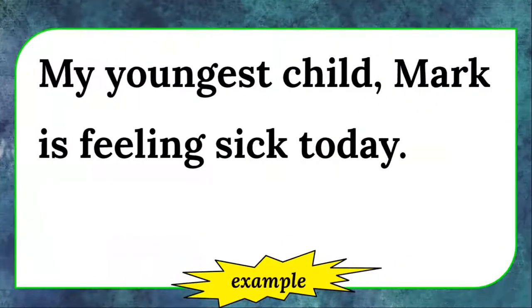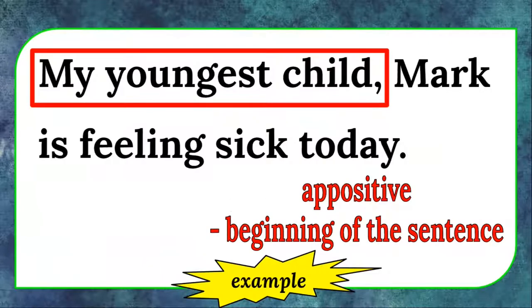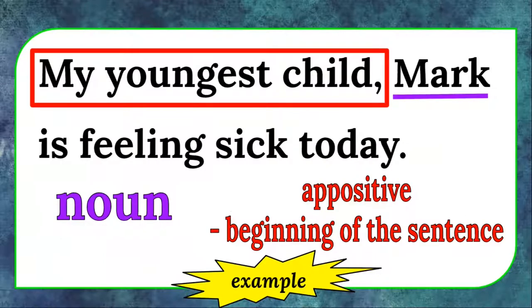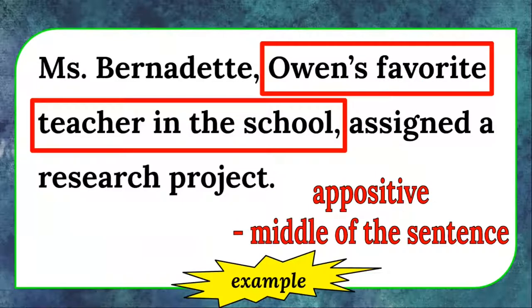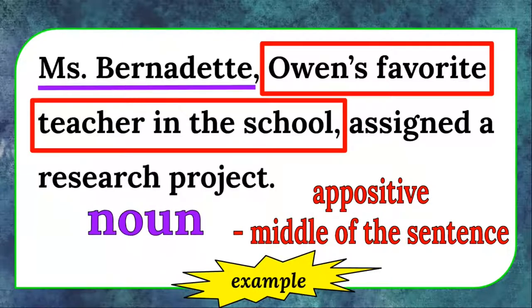My youngest child, Mark, is feeling sick today. The appositive is "my youngest child." It is written at the beginning of the sentence. It refers to the noun Mark. Ms. Bernadette, Owen's favorite teacher in the school, assigned a research project. The appositive is "Owen's favorite teacher in the school." It is written at the middle of the sentence. It refers to the noun Ms. Bernadette.